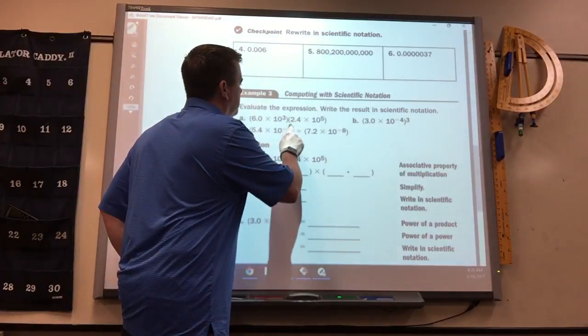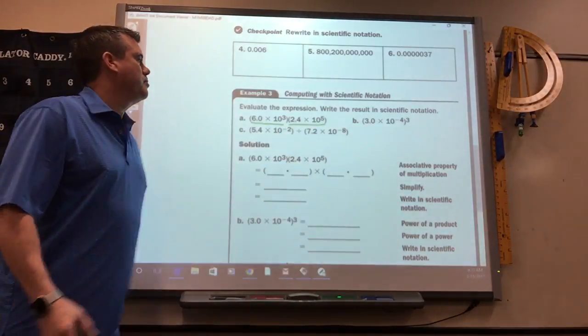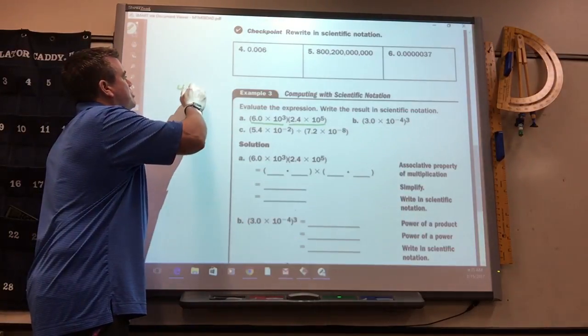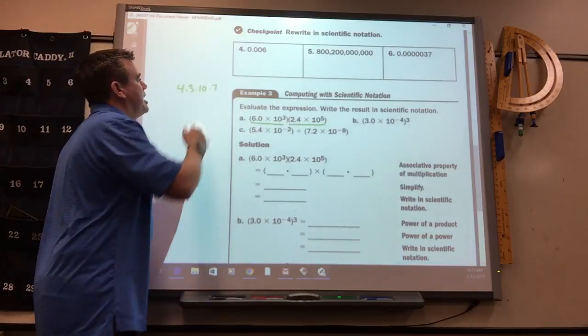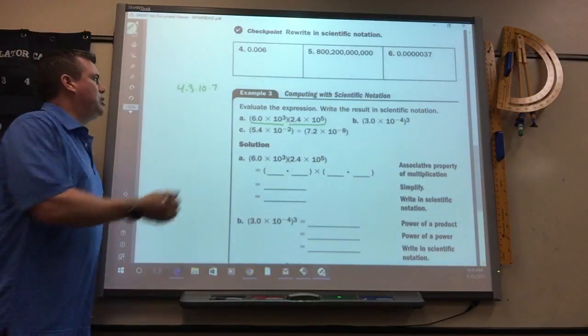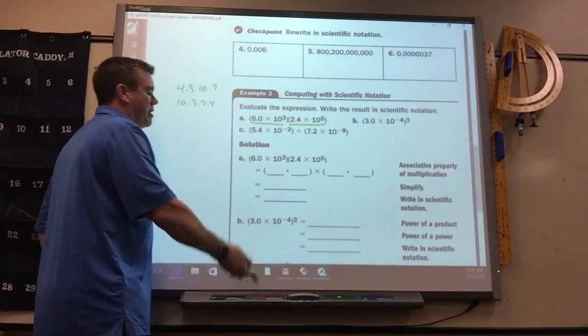But when you multiply two scientific notation numbers, remember when you multiply, if you have 4 times 3 times 10 times 7, does it matter what order you're multiplying? No. Well, you can rewrite it, 10 times 3 times 7 times 4, you get the same answer.